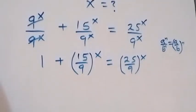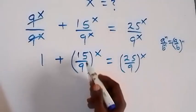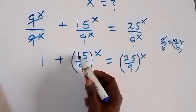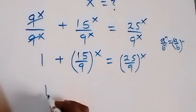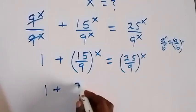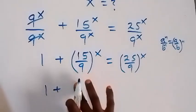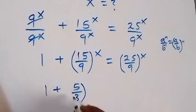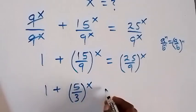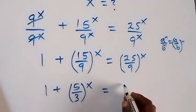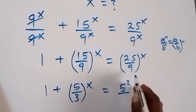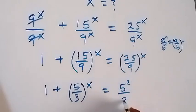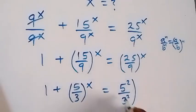From here, we can reduce this. 3 will go into 15, that's 5. 3 will go into 9, that's 3. So we have 1 plus (5 over 3) raised to power x. And we can express 25 as 5 squared, that's 5 times 5, and 9 as 3 squared, that's 3 times 3, then raised to power x.